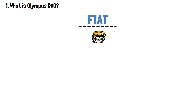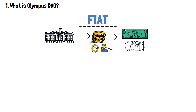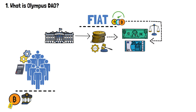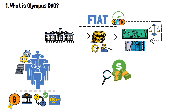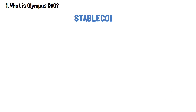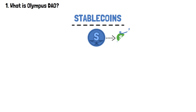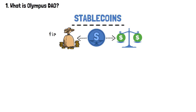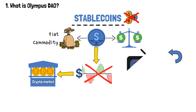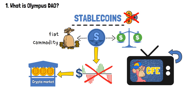Fiat refers to traditional currencies issued and regulated by governments, such as the US dollar or the euro. In the context of crypto, fiat often serves as a benchmark or reference point for value comparison, facilitating conversions, trading, and the establishment of value within the broader crypto ecosystem. And when it comes to stablecoins, it's a type of digital asset designed to maintain a stable value, typically pegged to a specific reserve asset like a fiat currency or a commodity. Unlike other cryptocurrencies, stablecoins aim to mitigate the volatility that often characterizes the crypto market.